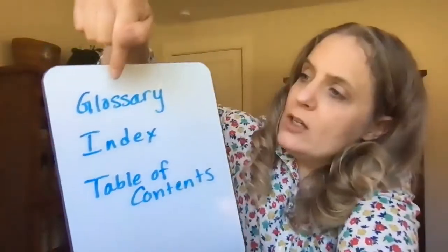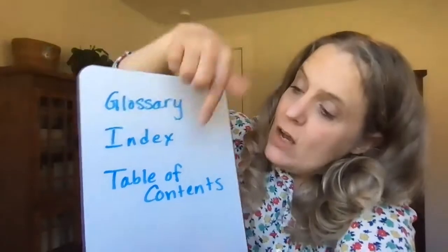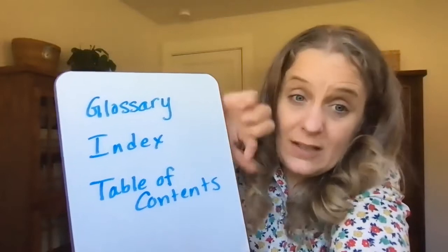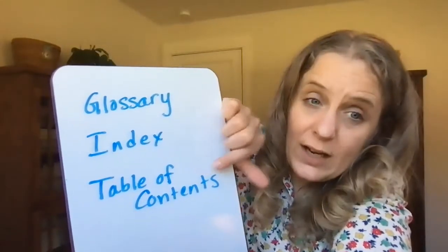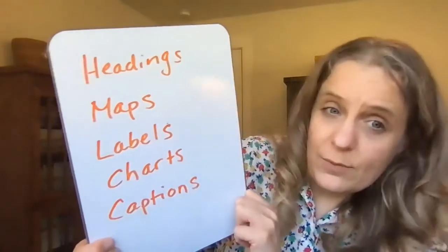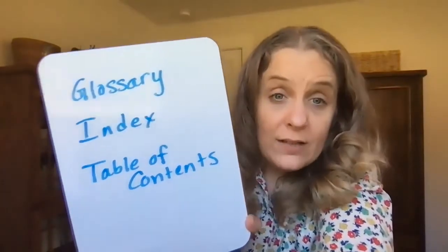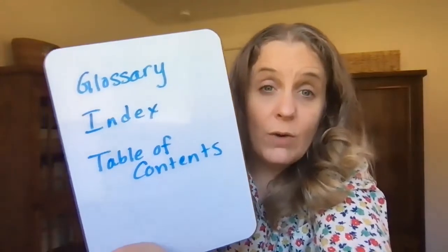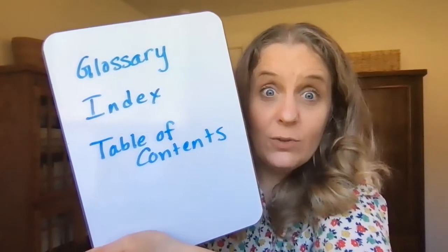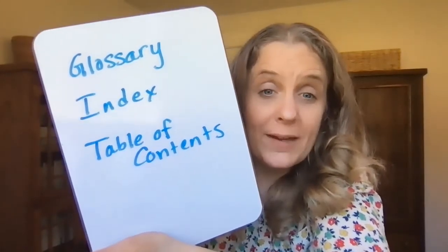So what I want you to do is show me an example of one of these things. Bonus points if you can find a glossary where words are being defined, or an index like in the recipe book, or a table of contents at the beginning of a nonfiction book. If you can find a heading, map, label, chart, or caption, that's good too — but I'm really looking for these newer ones. Show us in the video below. Can't wait to see what you come up with at your house. You can use your Wonders book too if you don't have any other nonfiction books.